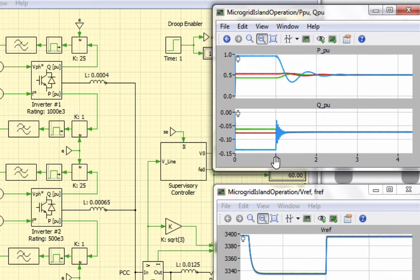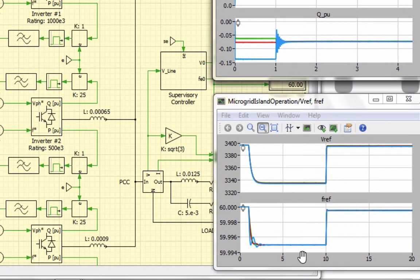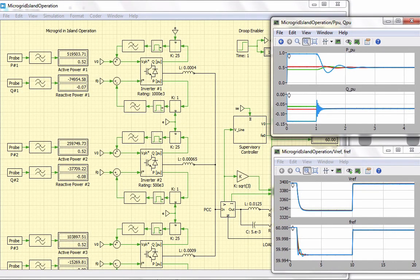At 1 second when the droop control is enabled, the per unit values of real and reactive power become equal in all the three inverters. However, the reference voltage and frequency values change. At 10 seconds when the supervisory controller is enabled, they are brought back to their correct values. The active and reactive power measurements in per units and SI units are also displayed here on the left using Plex display blocks.